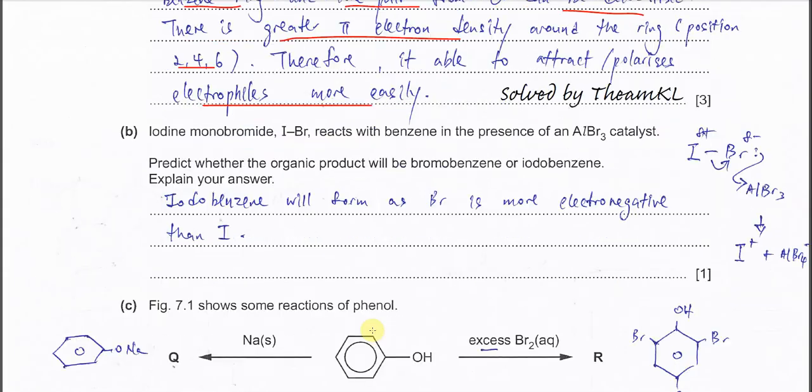Part b: Iodine monobromide IBr reacts with benzene in the presence of the catalyst AlBr3. Predict whether the organic product will be bromobenzene or iodobenzene. We need to know which electrophile will be formed. Iodine is less electronegative than bromine, so bromine will get the electron pair. The IBr bond breaks and these electrons are gained by bromine.